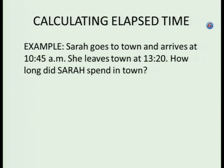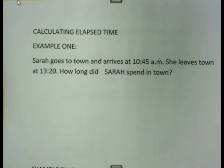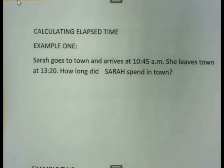Now it is obvious that Sarah came at 10:45 a.m. in the morning to town and she left at 13:20. In other words, that was afternoon after 12 o'clock that she left. How are we going to calculate the elapsed time? In this example now, we are going to calculate how long Sarah is spending time.